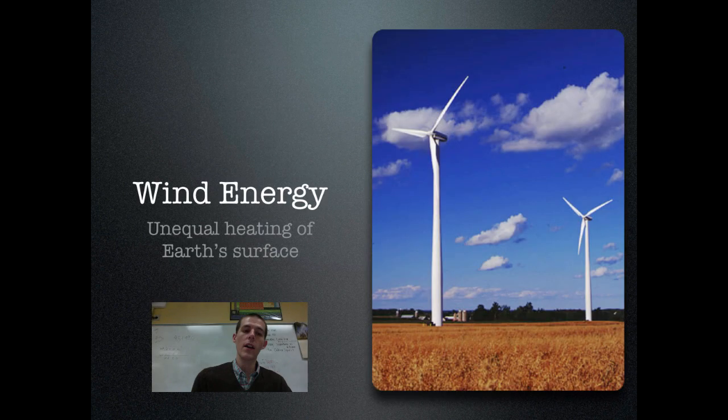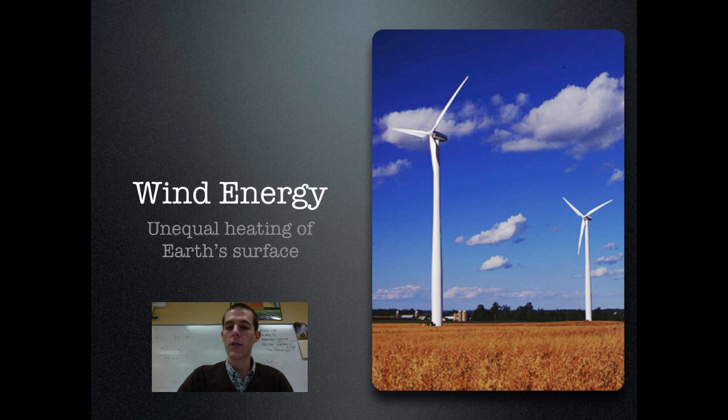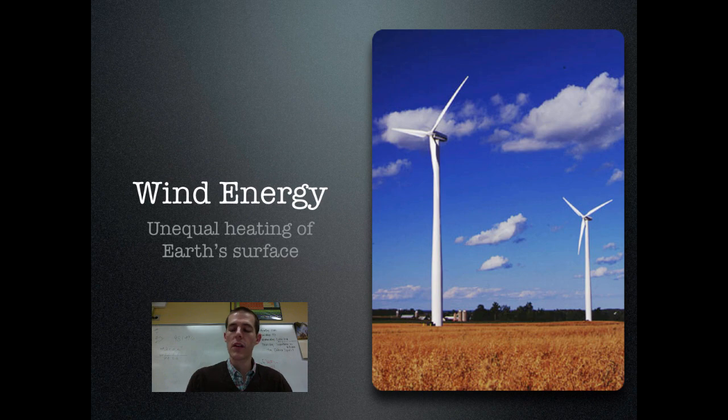The last energy we're going to talk about for the day is going to be wind energy. And this is due to the unequal heating of the Earth's surface. Remember, if areas of the Earth's surface get warmer, they cause air to rise up. Cooler surfaces cool the air, causing air to fall down. So this rising and falling convection cell of air causes the wind, and we can harness the movement of that wind to produce electricity.